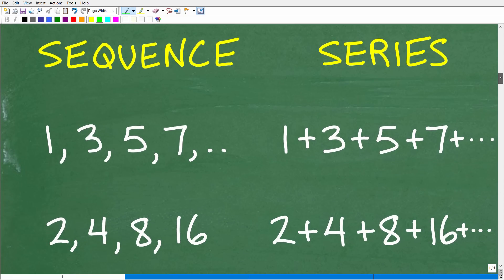These numbers here are called terms. So this is like the first term, the second term, the third term of this particular sequence. A lot of the sequences and series that you're going to deal with are basically classified in two different types: arithmetic sequence and arithmetic series, and geometric sequence and geometric series. Here we have a pattern of numbers: one, three, five, seven.